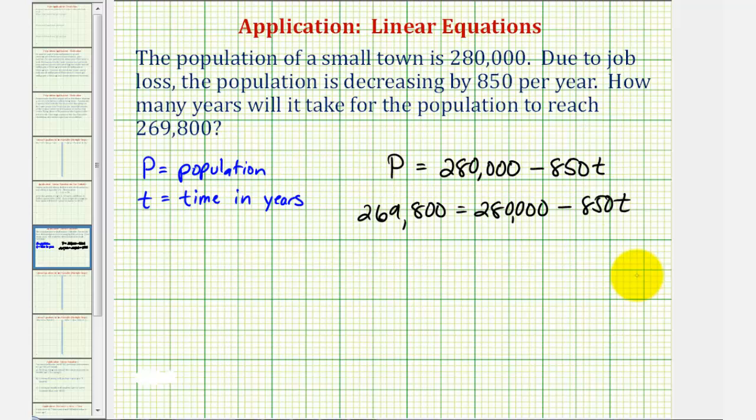Our goal here is to isolate T. Because T is on the right side, our goal is to write the equation in the form of some value equals T. We'll start by undoing this positive 280,000 on the right side by subtracting 280,000 on both sides of the equation. Notice how this difference here will be negative because we're subtracting a larger amount. This difference is negative 10,200. On the right side, this is zero, and then we have minus 850T.